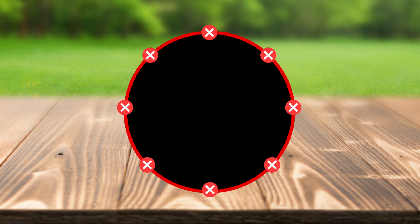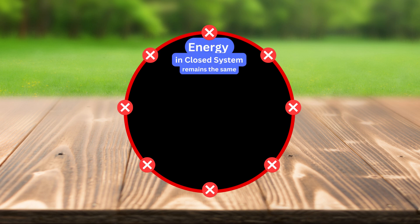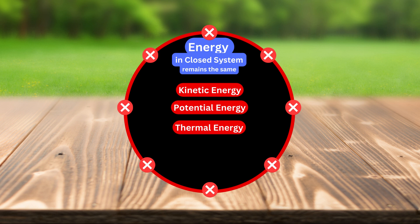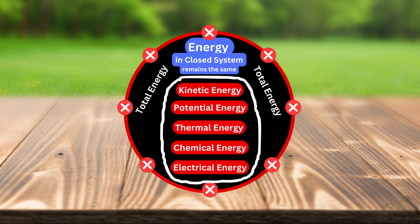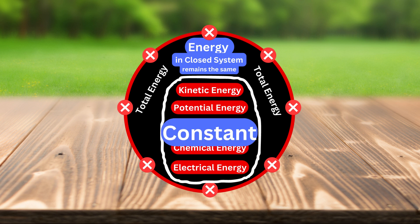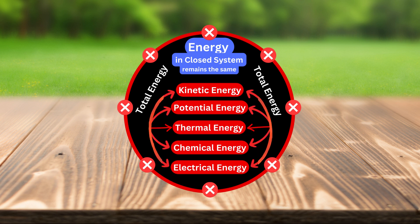The overall amount of energy in a closed system doesn't change, even when these types of energy can be transferred from one into another. The total energy, before and after the conversion, stays constant when energy is changed from one form to another.